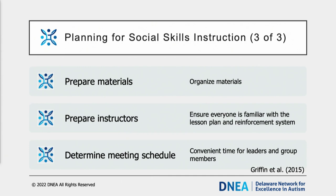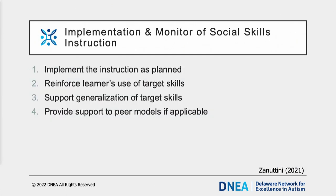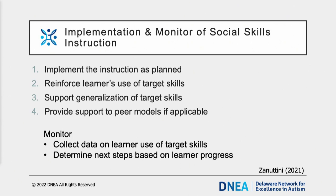Before you begin social skills training, you will need to prepare the materials. If you have selected a specific curriculum, you will need to obtain those materials. Make sure that everyone leading the group is prepared and familiar with the lesson plan and the reinforcement system for participants. Determine the meeting schedule — a meeting time and place needs to be selected that is convenient for the learner with autism, other members, and leaders. When implementing social skills instruction, it is essential to implement instruction as planned, reinforce the learner when they use target skills, collaborate with parents and other professionals to support generalization, and provide gratitude to any peer models. Monitoring can be done by collecting data on the learner's use of the target skill and using the data to determine next steps.